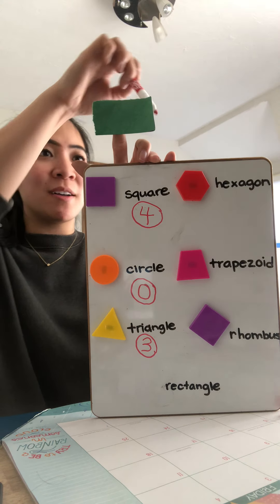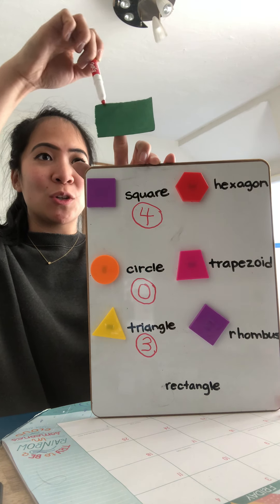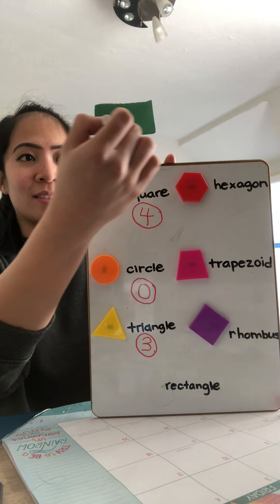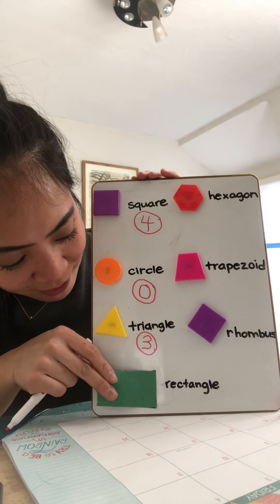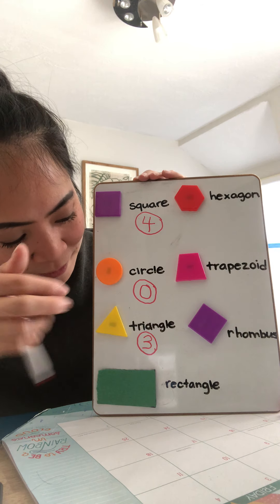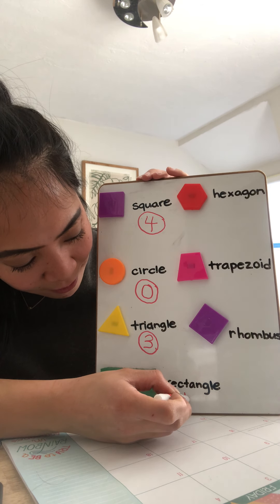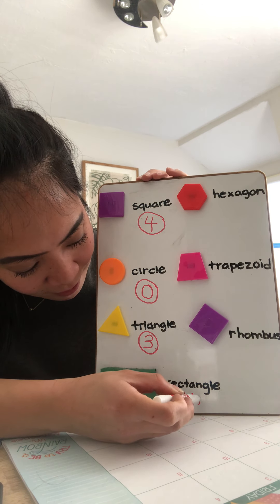A rectangle has two small sides and two long sides. Four sides in a rectangle. Let's write it down here. I'm going to circle it.